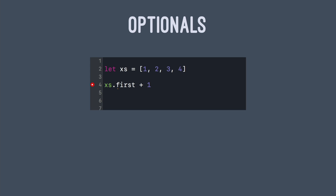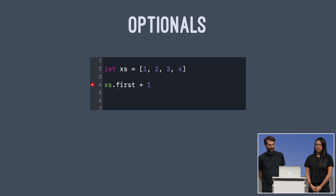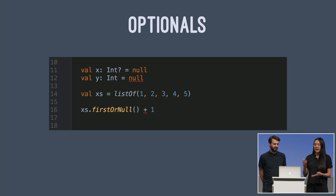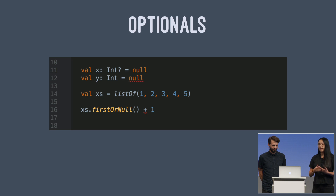In Swift, one of the nicest features is the optional type — it allows you to express the absence of a value in a type-safe way. For example, with an array of integers, Swift prevents you from adding one to the first element without handling the case when the array is empty. Kotlin has made null safety a first-class concern as well. You must explicitly tell Kotlin that a variable can hold a null value, and it prevents storing null in a non-nullable type. Kotlin's `firstOrNull` method behaves just like Swift's `first`, and similarly, Kotlin prevents you from adding one to an optional integer.